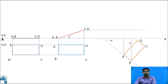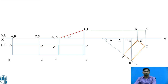Point B is also on the XY axis. Draw projectors from points C and D up to the projectors from C and D in the previous stage. Name the intersection points A, B, C, and D in the front view. Join A to B, B to C, C to D, and D to A. The third stage is now completed.